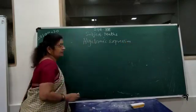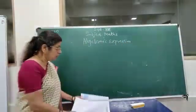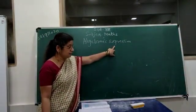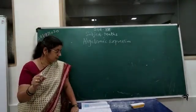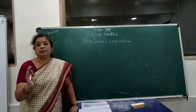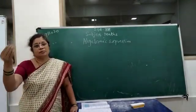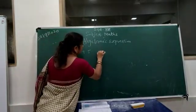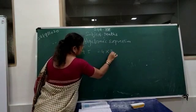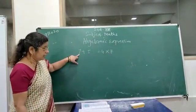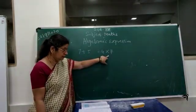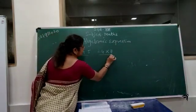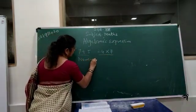Algebraic expression. Now, expression means what? Expression means a single or group of terms combined with symbols — positive, plus or minus. For example, 7 plus 5, or 24 into 7.